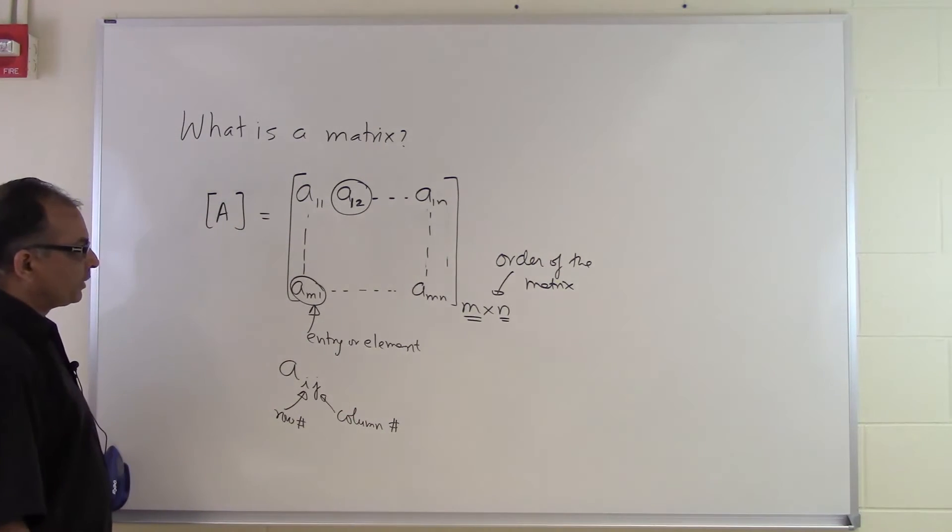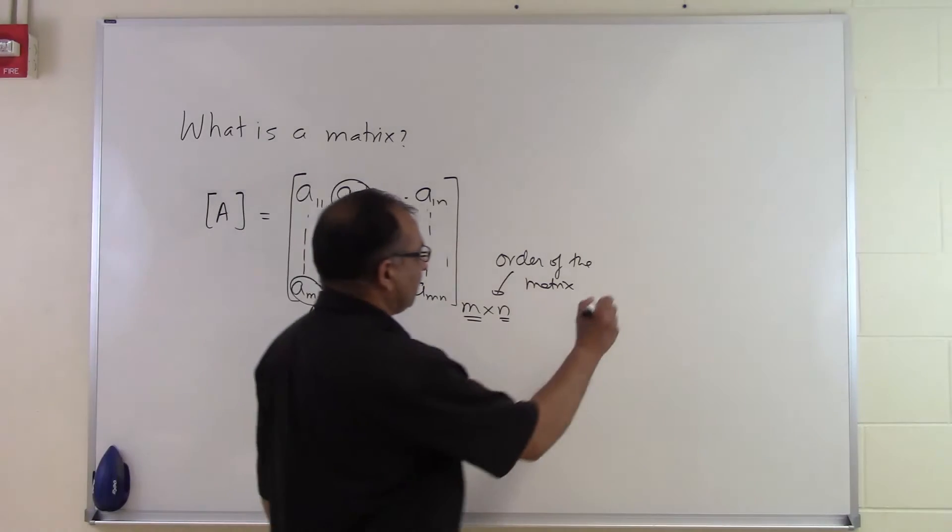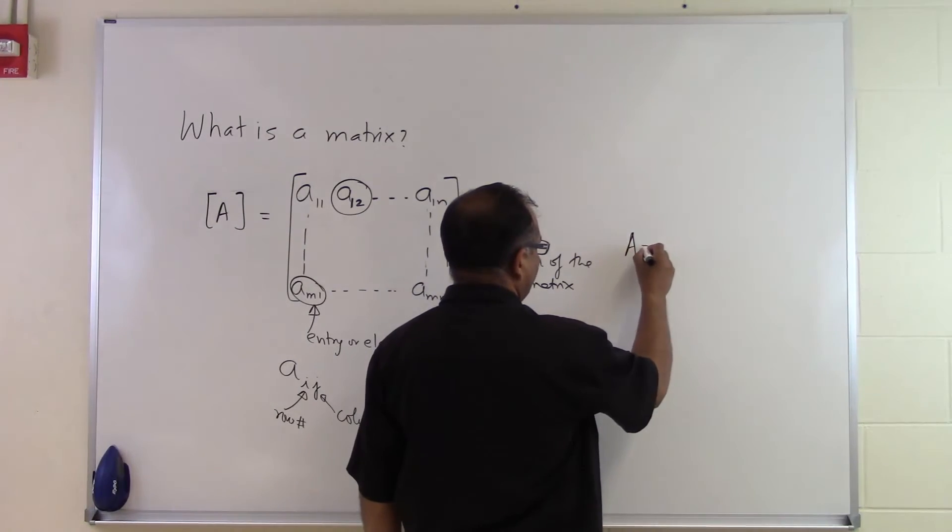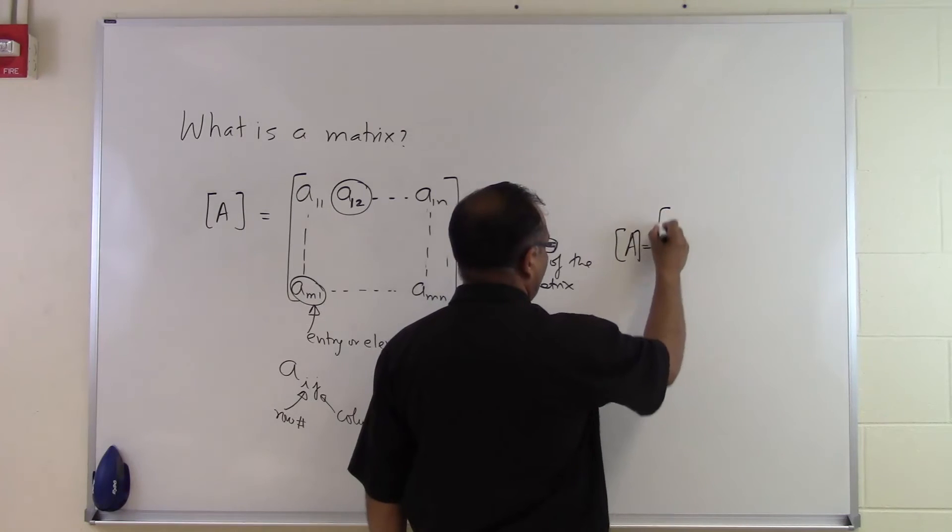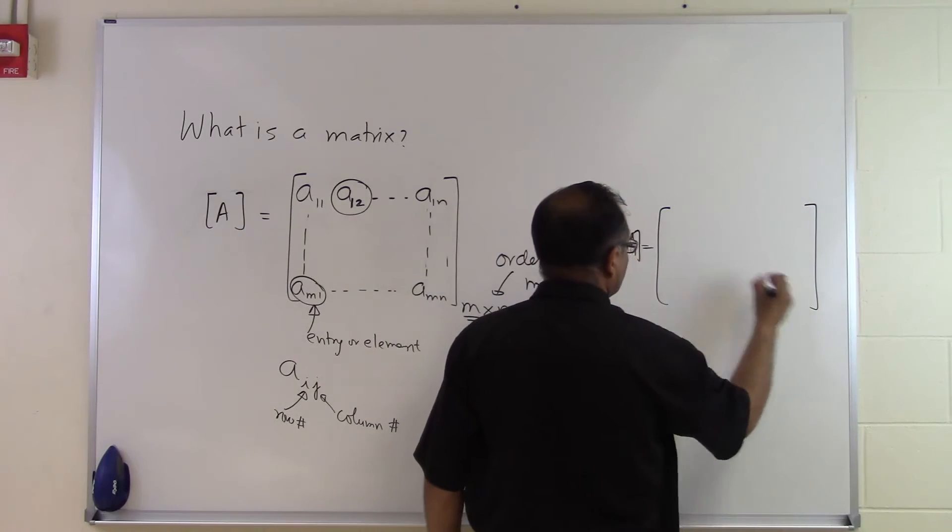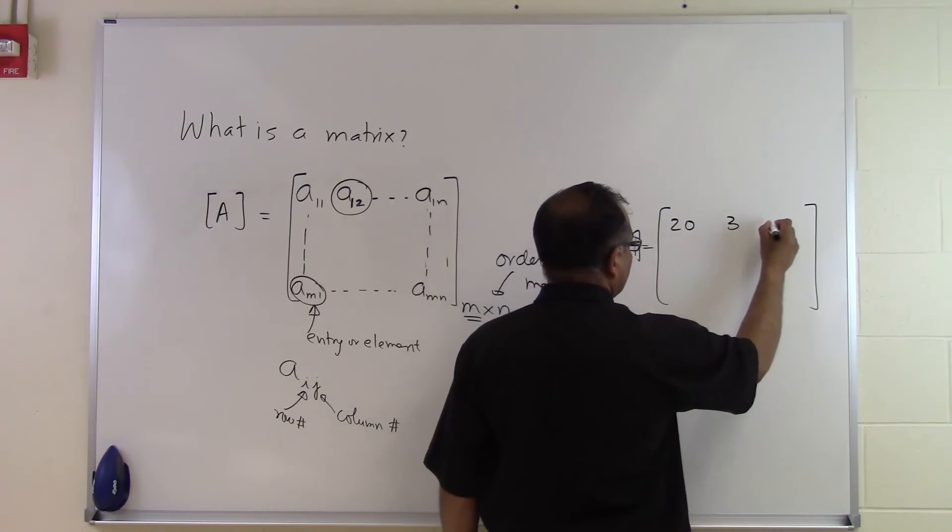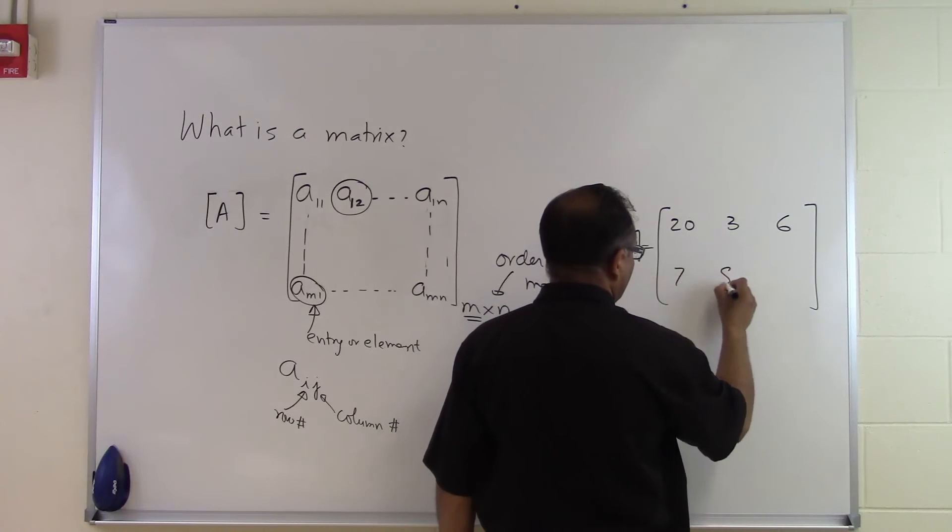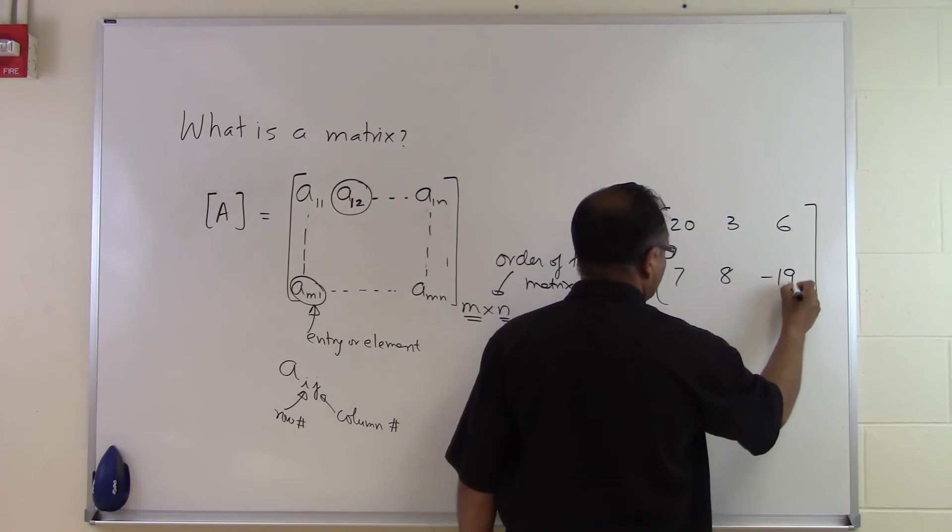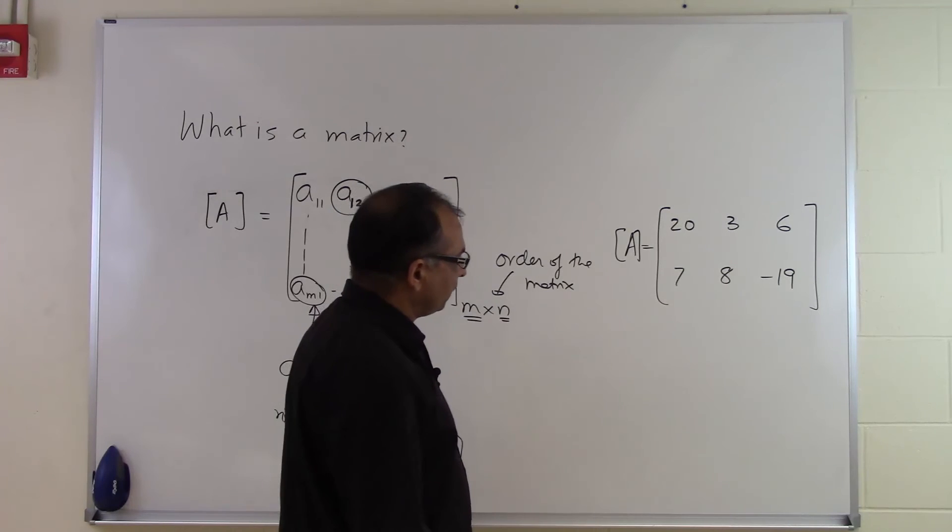Let's look at an example. Suppose somebody says my matrix A looks like this: 20, 3, 6, 7, 8, minus 19. That's what the matrix A looks like.